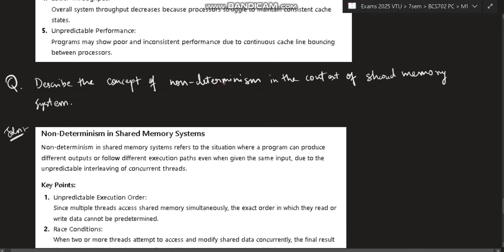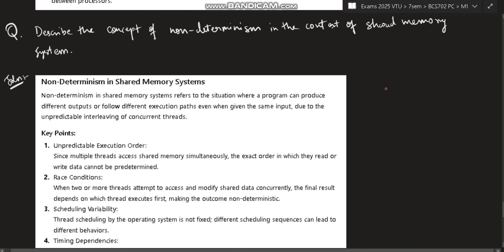The next one is describe the concept of non-determinism in the context of shared memory system. So shared memory system, as we discussed, there will be different CPUs and each will be accessing the shared memory. And what is non-determinism in that? Non-determinism in the shared memory system refers to the situation where a program can produce different outputs or follow different execution paths, even when the same input is given, due to unpredictable interleaving of concurrent threads. If there are multiple instructions which are happening, multiple threads are running, each of these can access the data in a different path. It means it will go through some other variable and access, it will go through some other function and access. Each will reach to a different conclusion. So that is the non-determinism. We cannot know which order the executions of the processes will happen and how the data will be altered.